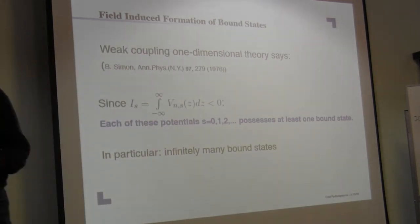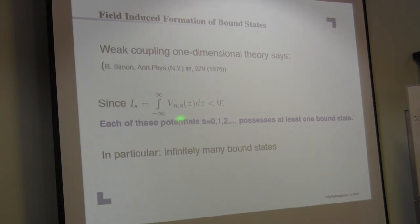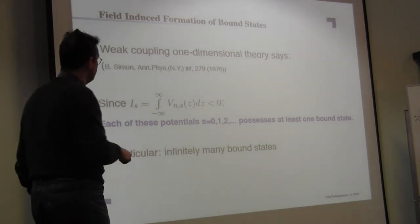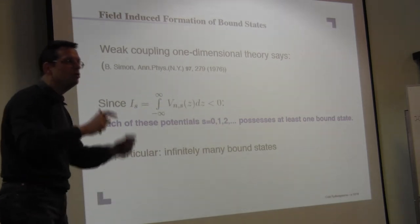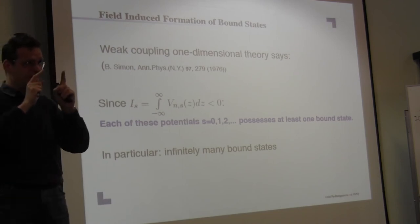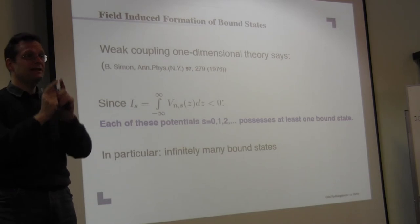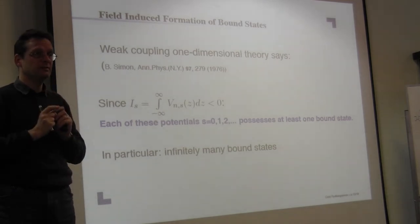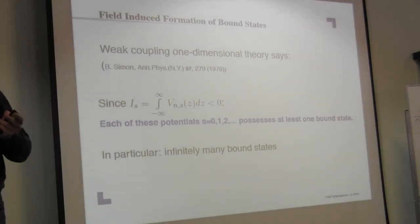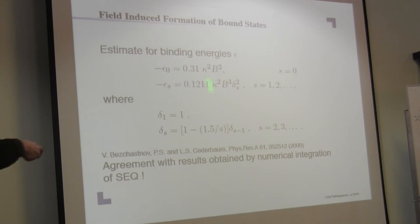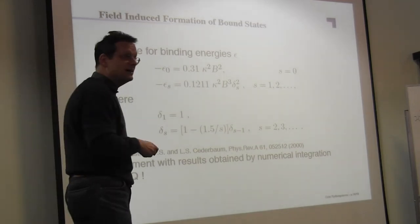And that tells you if I have an integral of V being less than 0, then definitely there's a bound state. Now I do have infinitely many such Landau orbitals, and each one contributes at least one bound state. So I have infinitely many bound states here. That's the conclusion. So that's the physics behind this.